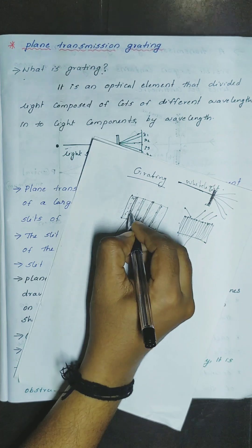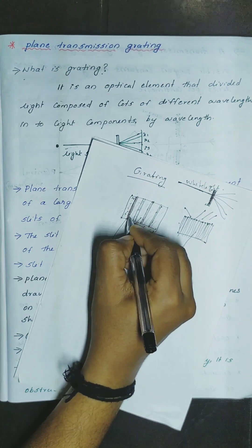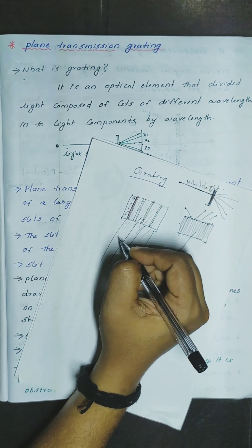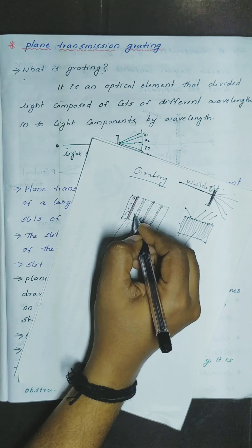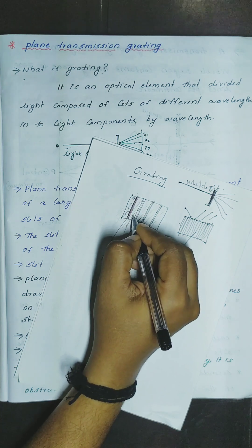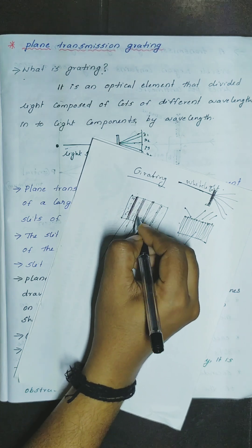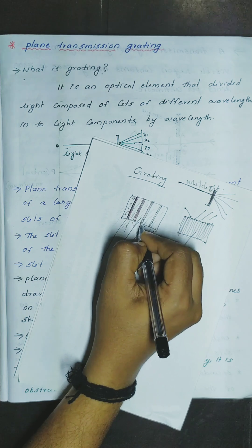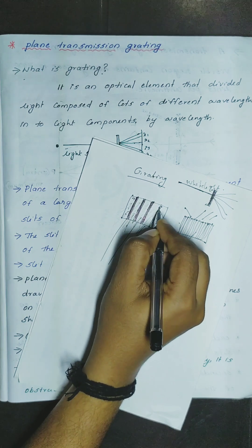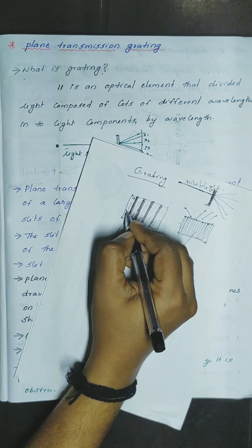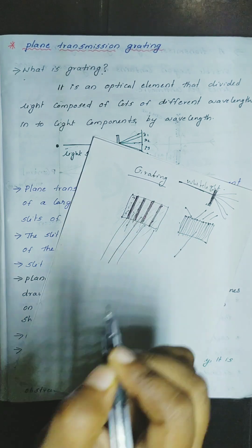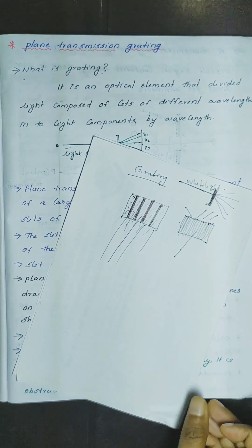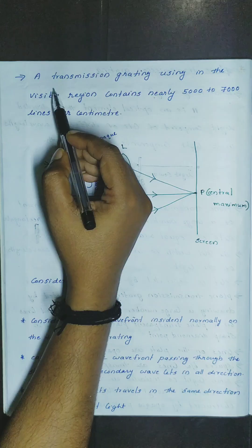This is the opaque region. This is also the slits. This is the opaque region. This is the transparent region.